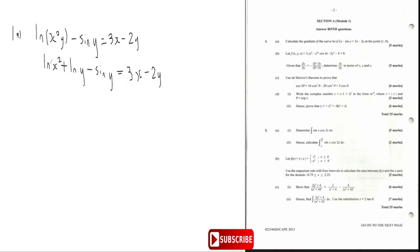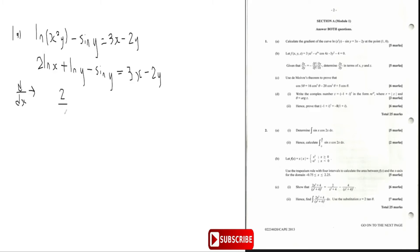Now I differentiate both sides with respect to x. To differentiate ln(x²), think of it as 2·ln(x). When you differentiate 2·ln(x), you get 2 times (1/x), which gives 2/x. For ln(y), when you differentiate ln(y) with respect to x you get 1/y multiplied by dy/dx, which I'll write as y′.